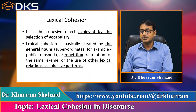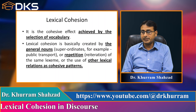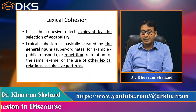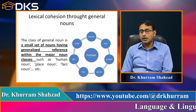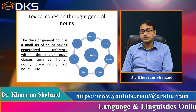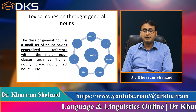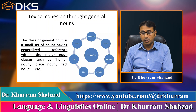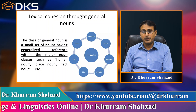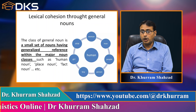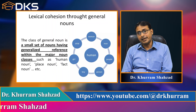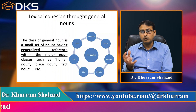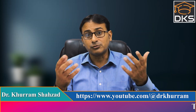Lexical cohesion is achieved through cohesive effect, and that cohesive effect is created through the use of vocabulary. Lexical cohesion is basically created by general nouns — for example, superordinates like public transport — or through repetition, reiteration of the same lexeme, or the use of other lexical relations as cohesive patterns. For general nouns, we have a small set of nouns with generalized reference within major noun classes related to human beings: man, woman, people, person, boy, girl, child. Human being is a general concept.